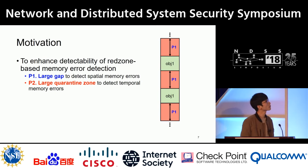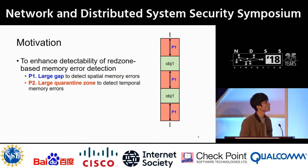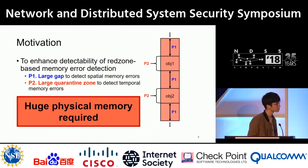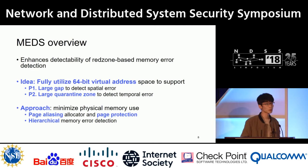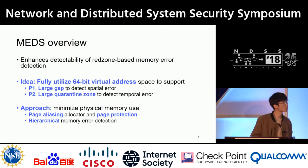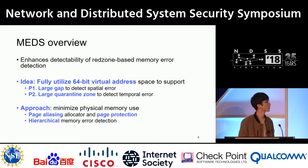To enhance the detection capability of the redzone-based approach, we need a large gap between objects to detect spatial memory errors, and a large quarantine zone to detect temporal memory errors. But just increasing the gaps and quarantine zone requires a lot of physical memory. To solve these problems, we introduce our system MADS, which enhances detection capability by fully utilizing the 64-bit virtual address space. Our approach minimizes physical memory use by utilizing page aliasing, page protection, and a hierarchical memory error detection mechanism.